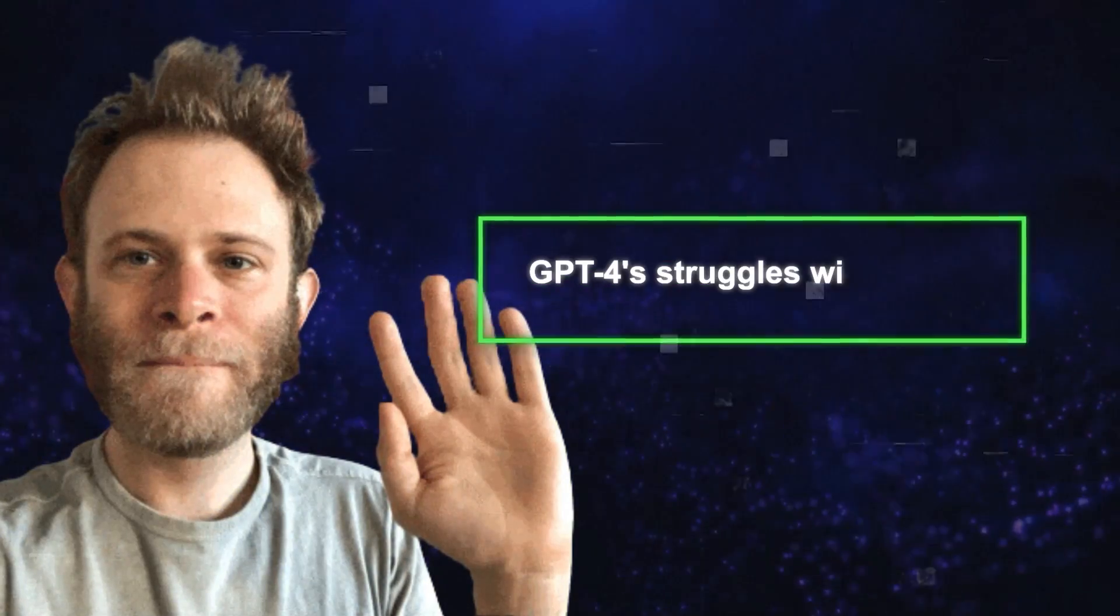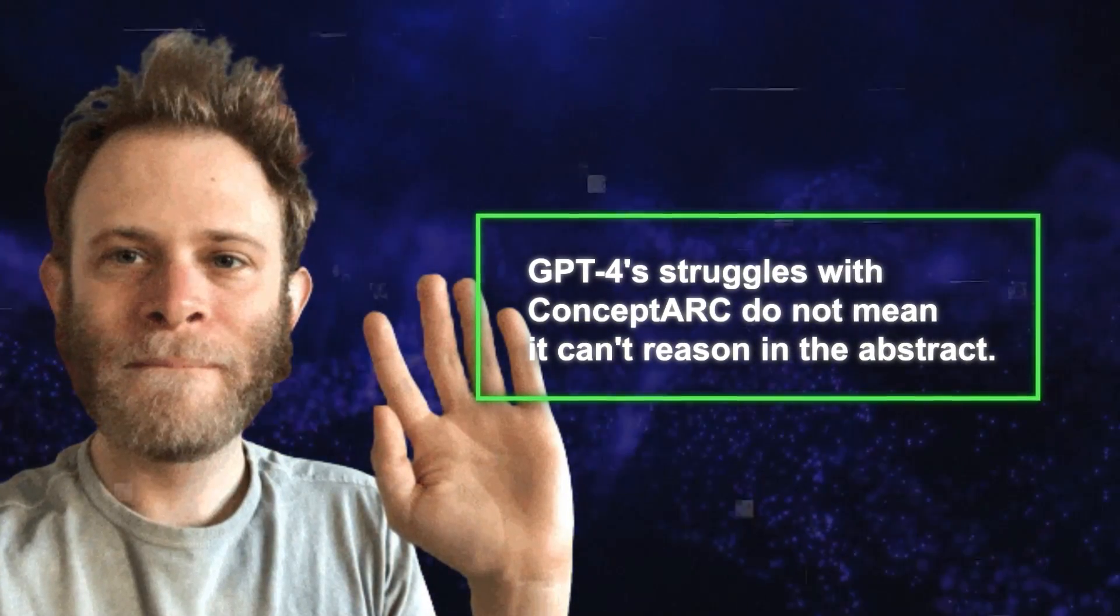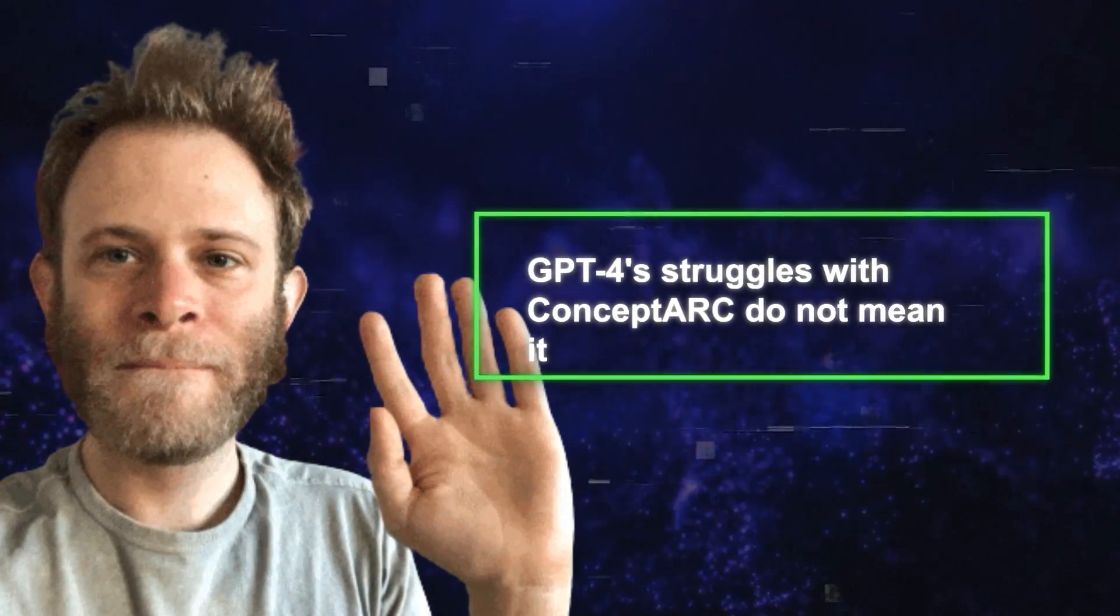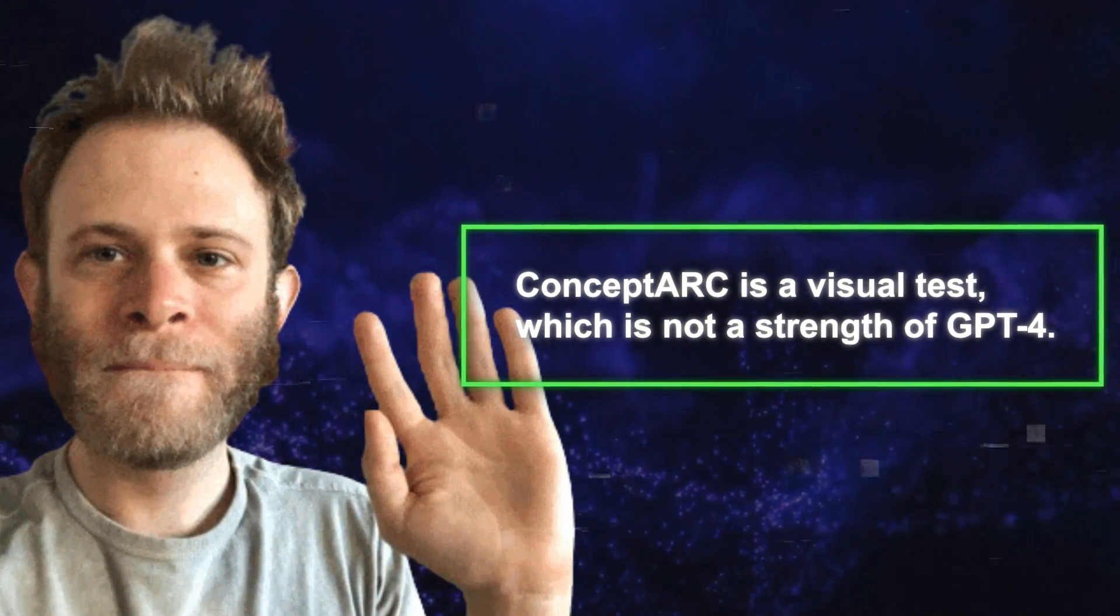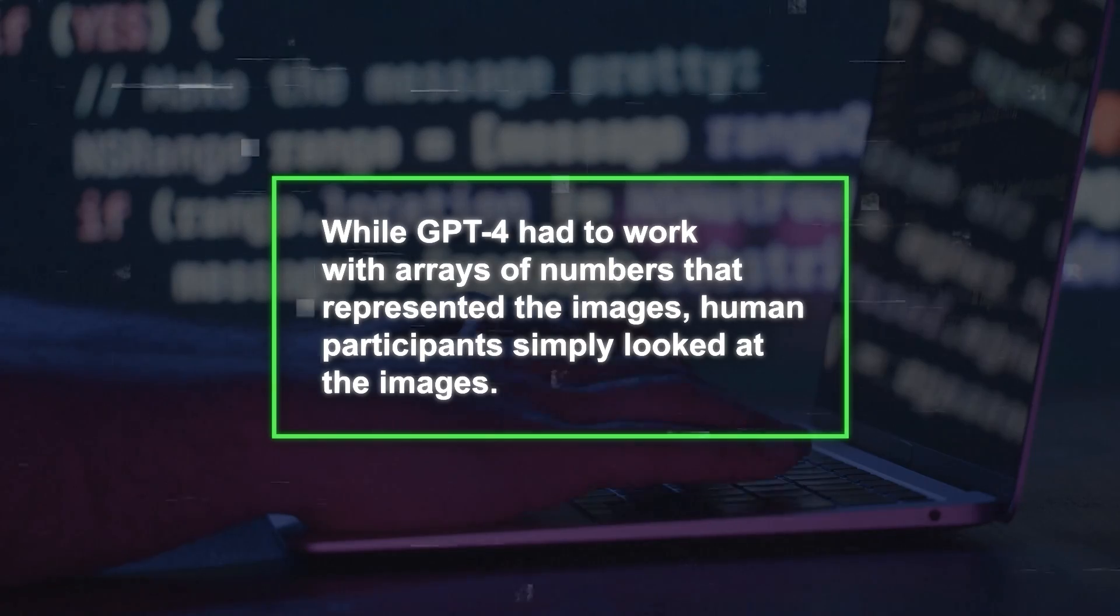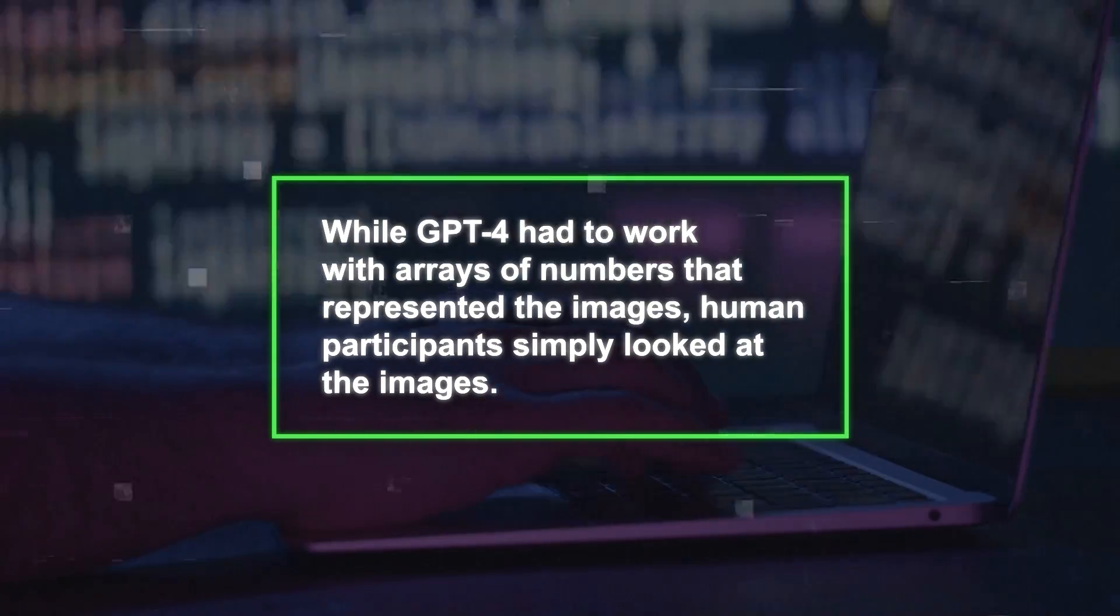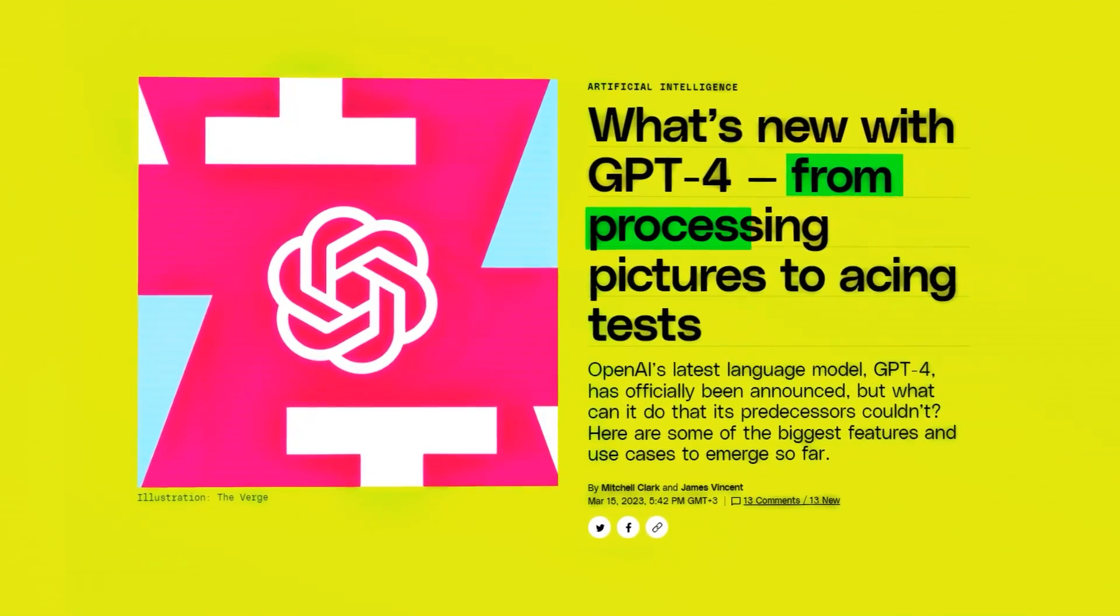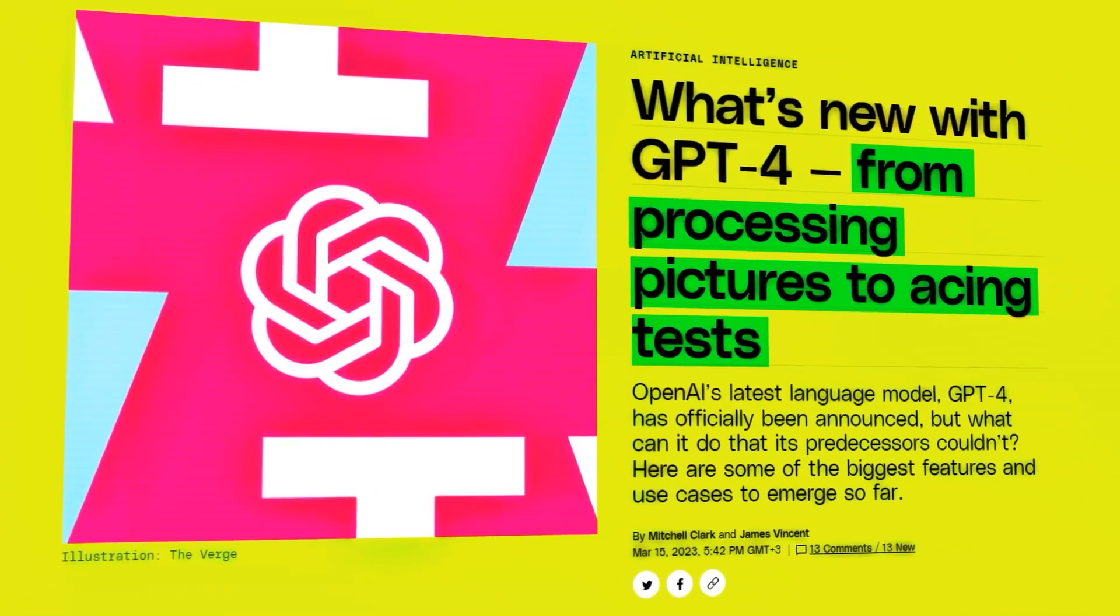However, Bowman argues that GPT-4's struggles with Concept ARC do not mean it can't reason in the abstract. He points out that Concept ARC is a visual test, which is not a strength of GPT-4. Also, while GPT-4 had to work with arrays of numbers that represented the images, human participants simply looked at the images. A version of GPT-4 that can process images as input has been created by OpenAI but is not yet publicly available.